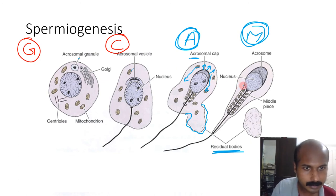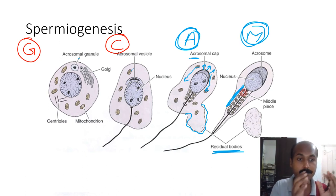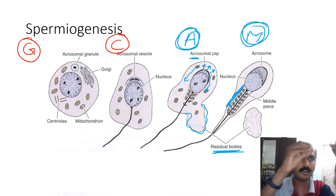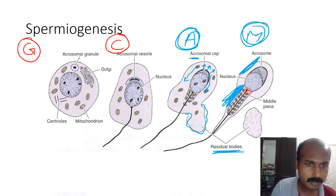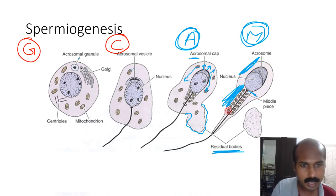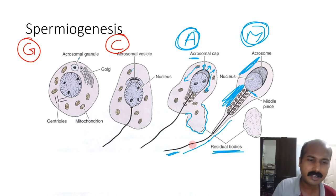The middle piece is the region where mitochondria are arranged in a spiral or helical pattern around the axonemal complex. The head is the anterior region. Between head and middle piece is the connecting piece or neck. After the middle piece comes the tail, subdivided into a long principal piece and a short end piece.